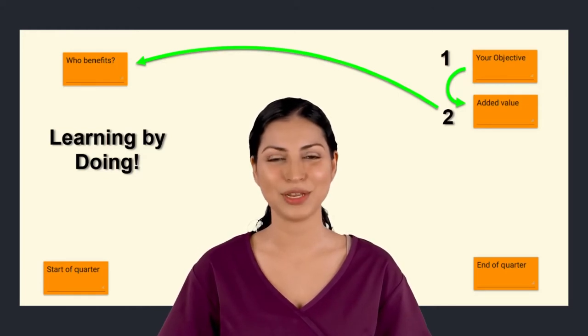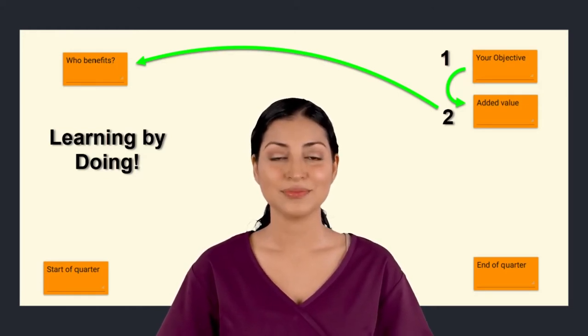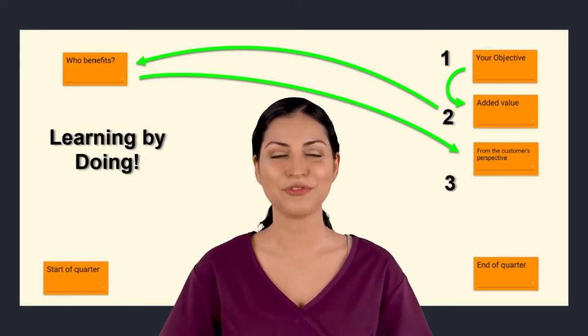Go back to the board and look at the post-its you created on the far right of the timeline. Take the role of the customer and ask if the wording fits.